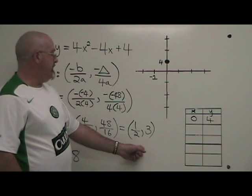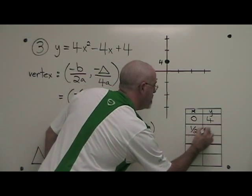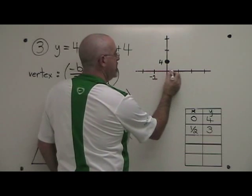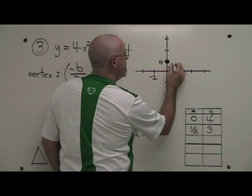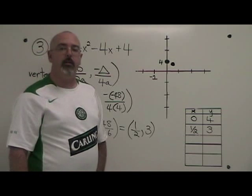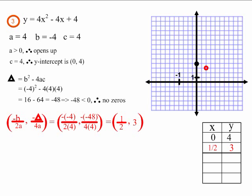We put this in the table and on the graph. The way this is scaled, 1 half is here, 3 is here. Our vertex ends up being about here. This is how we find the vertex for example 3. This is what example 3 looks like after finding the vertex.